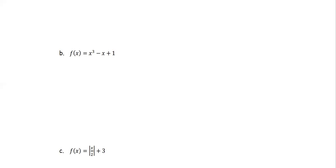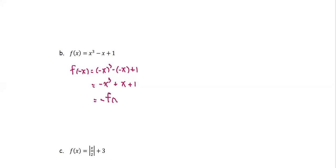The next function: f(x) = x³ − x + 1. We replace x with negative x: (−x)³ − (−x) + 1 = −x³ + x + 1. The first term is opposite, the second term is opposite, but the last term is not opposite. It is not totally opposite, and also not exactly the same as the original function. Therefore, this is neither odd nor even.